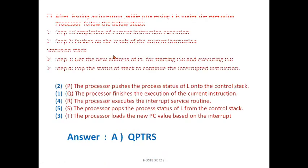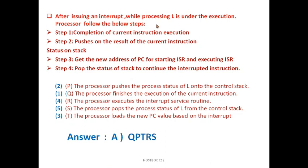Now let's go for the answer. What happens whenever an interrupt arises? After an interrupt is issued while process L is under execution, the processor follows these steps: Step 1 — completion of current instruction execution. Step 2 — push the result of the current instruction status onto the stack. Step 3 — get the new address of PC for starting the ISR and execute the ISR. Step 4 — pop the status from the stack to continue after the interrupt.